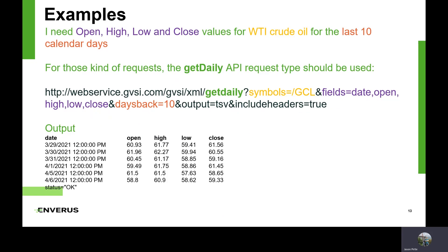Here is a very common use case for our customers: a user needs open, high, low, and close values for WTI crude oil for the last 10 calendar days. For that kind of request, the Get Daily API request should be used. We have an example here where all the parameters are color coded with text above to give users a hint about what the parameters mean, and below that is the output.